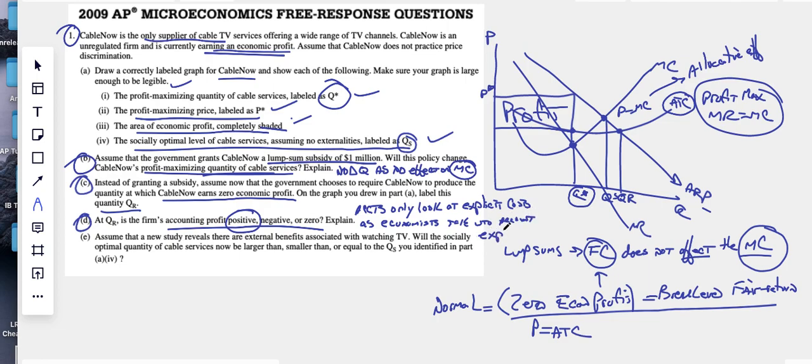Economists take into account explicit and implicit to break even. Now I haven't even looked at the answers, but I don't know if that's going to have to check it afterwards. ATC only looks at explicit costs, whereas economists or economic profit takes into account explicit and implicit.